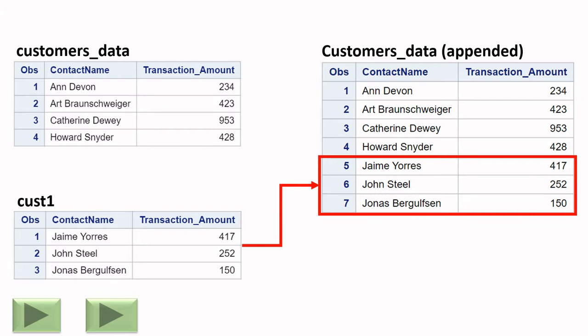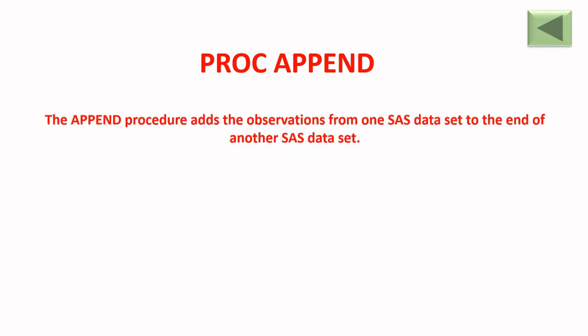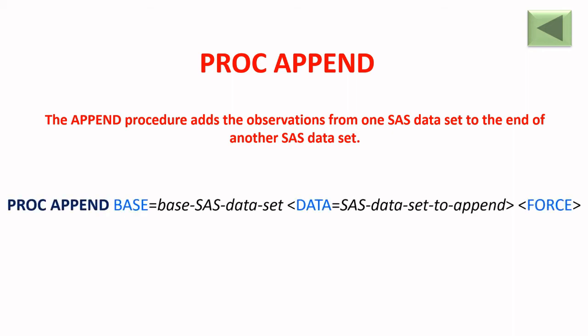Here's the problem statement: we have a first table called customer data and a second table, and we want to combine them together. The procedure we can use for this is PROC APPEND. Its definition states: the APPEND procedure adds the observations from one SAS dataset to the end of another SAS dataset.